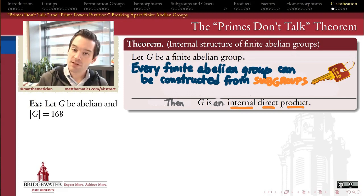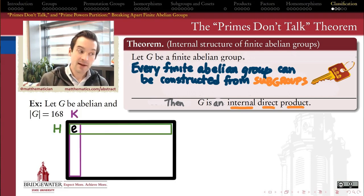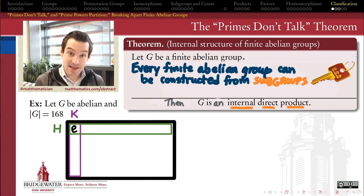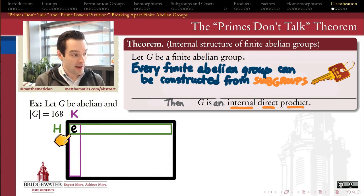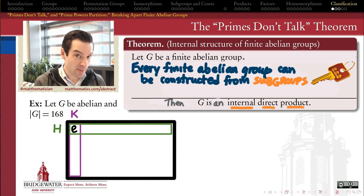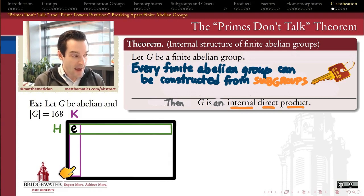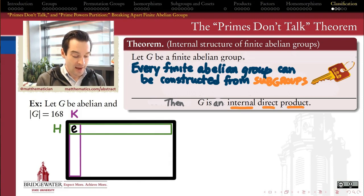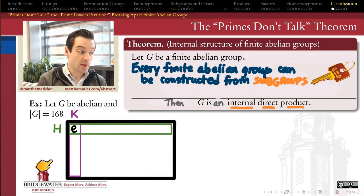Let me start by way of an example. Suppose I have an abelian group G of order 168. If it is indeed an internal direct product, it will have an internal times-table structure where I'll have one subgroup H and another subgroup K. We need those subgroups to be normal inside G — which, since G is abelian by hypothesis, we get automatically from any subgroup; every subgroup will be normal. And we need them to intersect only at the identity, so the identity element is the only thing these two subgroups have in common. Then we need every element of G to be written uniquely as a product of something from H with something from K.